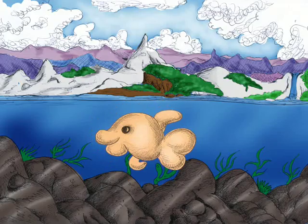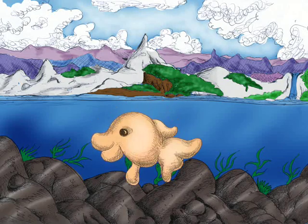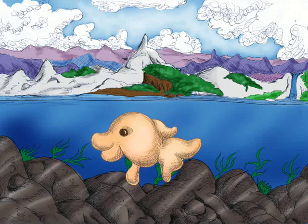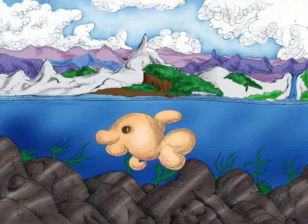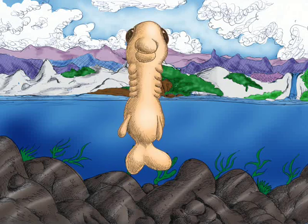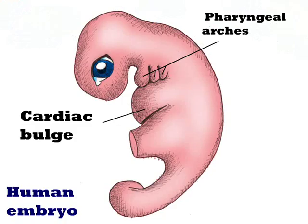Hi everybody! This is a tiny fish called Samakmak. She will help us in knowing the embryology of the thyroid gland, as the fish is similar to the human embryo in one of its developmental stages. The fish's neck is elongated to show gills, which is similar to the pharyngeal arches in human. This is a lateral view of the human embryo — notice the similarity between it and the fish.